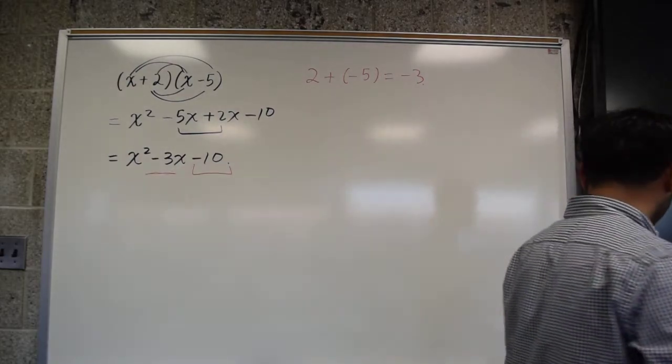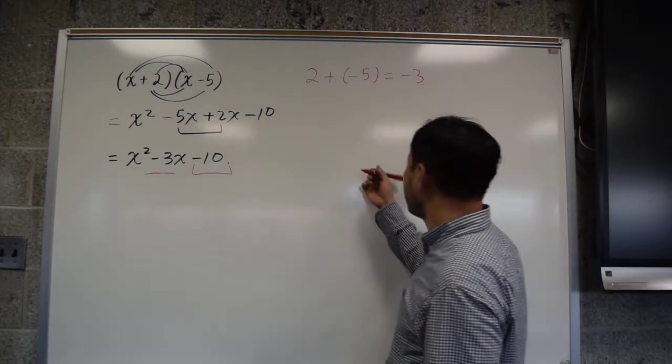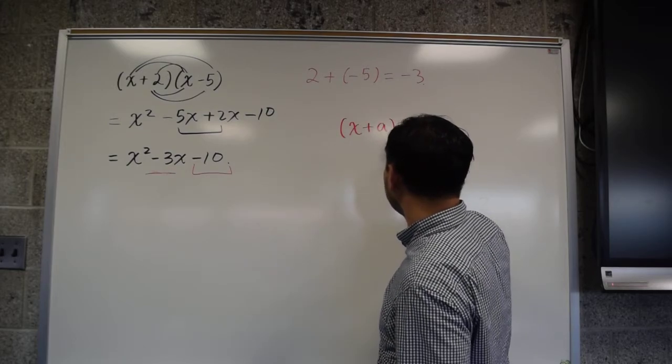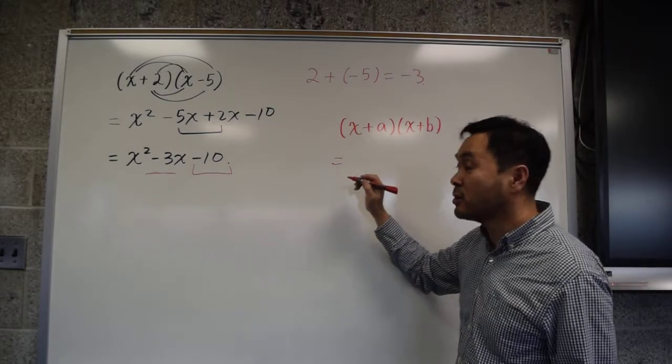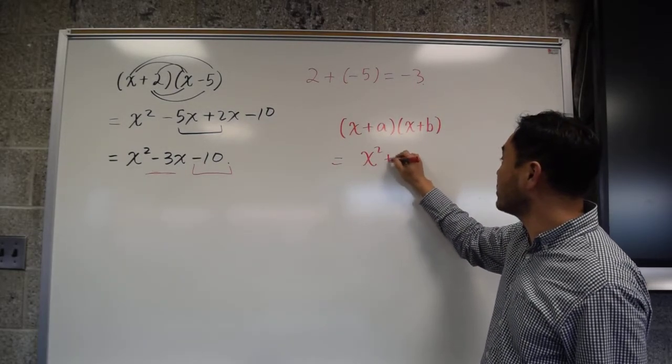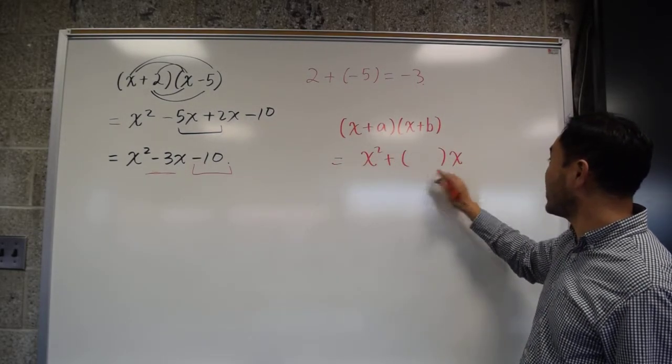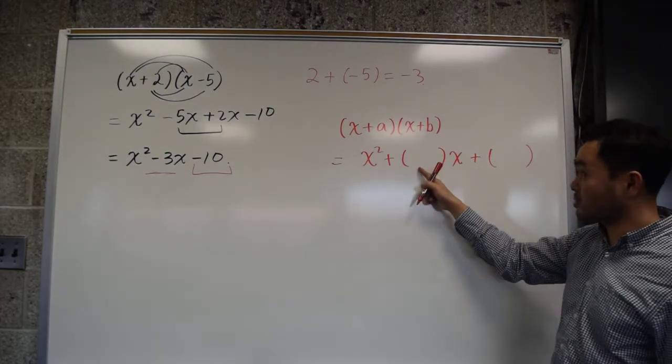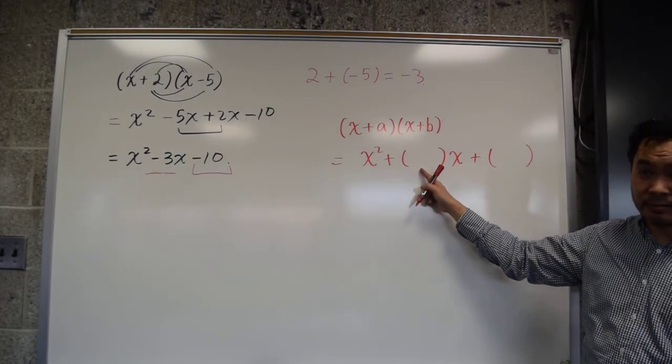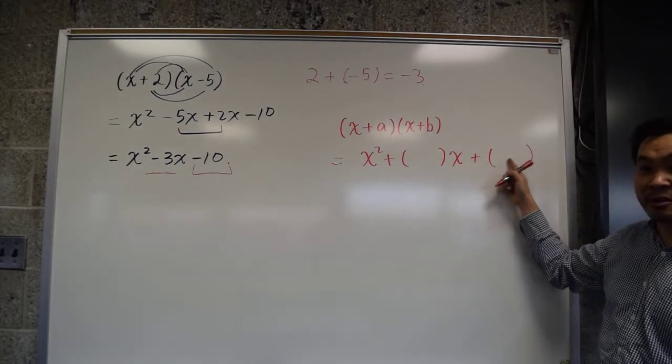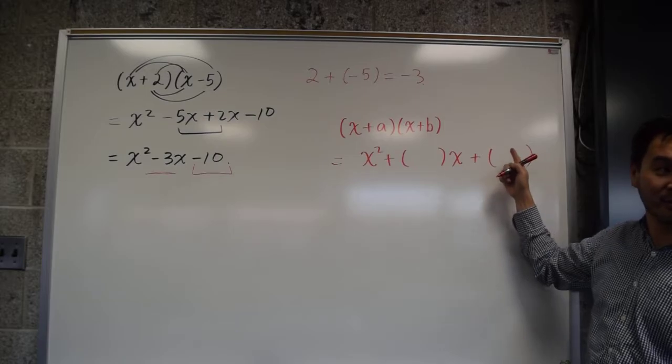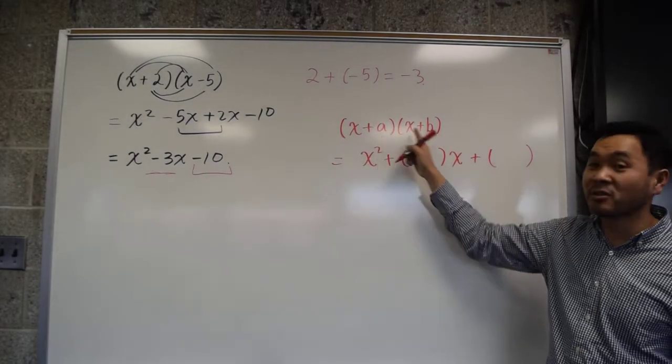In other words, what I'm trying to explain is that if you have (x+a)(x+b), if you multiply them out, you get x², and then something times x, and then something. What goes in here? I guess this is easier. What goes in here? a and b are some numbers. So what goes in here?